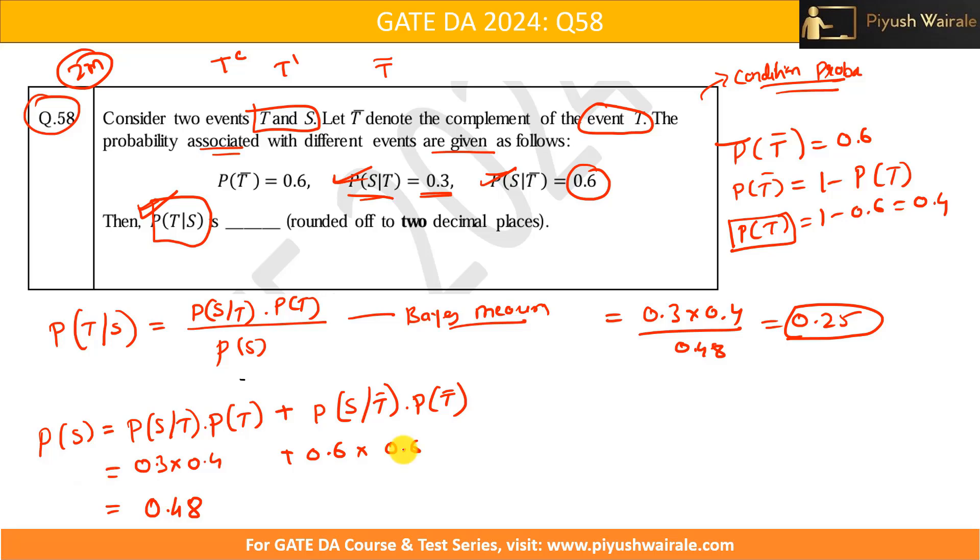So, one question definitely will be there. Either they will directly give like this or some problem statement will be given to you. But one question will be definitely on this particular topic, either for one mark or two marks, okay? So, please try to focus on this particular topic so that you can confirm your one or even two marks, okay? So, definitely one question will be there from this particular topic.